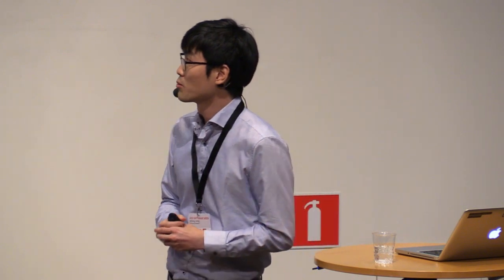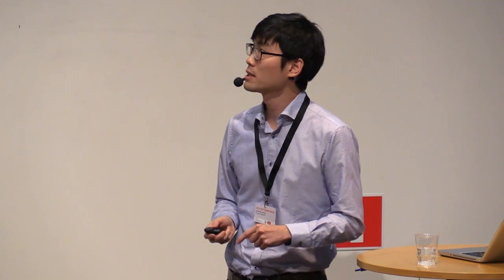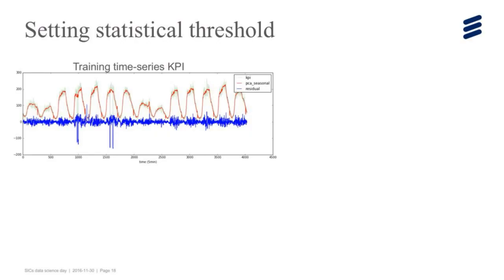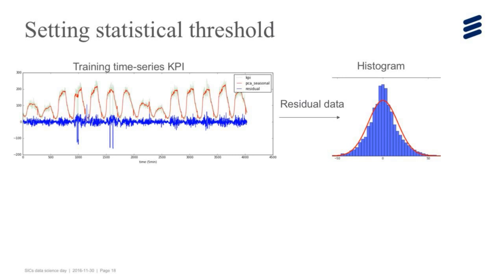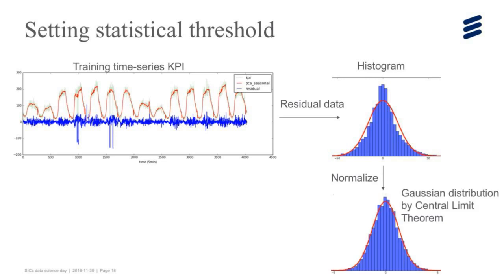Now let's move to threshold setting. Once we forecast time series pattern, we get the residual. We take a simple approach: we build a statistical model on it. With the training data, we get the pattern and residual data, the blue signal here. We plot the histogram on it. The red curve is the Gaussian distribution. It looks like not well fitted to Gaussian distribution because this residual data still has seasonality: high noise in daytime, low noise in nighttime. So it's very hard to find the distribution. But if we normalize this residual data by square root of number of users, and by central limit theorem, we can obtain this Gaussian distribution.